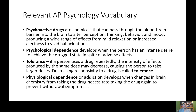Physiological dependence or addiction develops when changes in brain chemistry from taking the drug make it necessary to take the drug again to prevent withdrawal symptoms. Withdrawal symptoms are usually the exact opposite of what the drug does to you. For opioids, which relieve pain and cause euphoria, withdrawal would include feeling pain and unhappiness when not on the drug — which shows how this drug causes people to become addicted and abuse it.